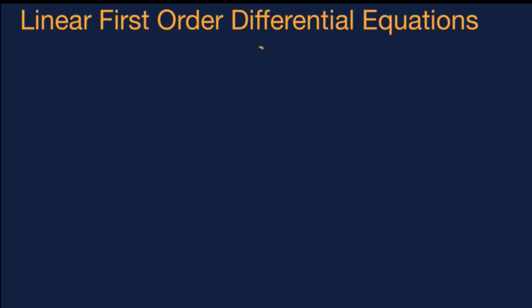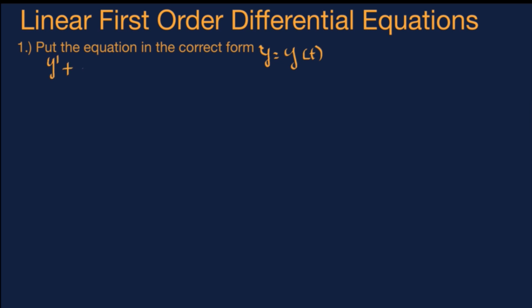Let's say we have a linear first-order differential equation, and we're trying to solve for y as a function of t. The first step is making sure that the equation is in the correct initial form: a linear combination where the derivative of y plus a coefficient of y — a continuous function of t called p(t) — times y, equals a continuous function we will call q(t).